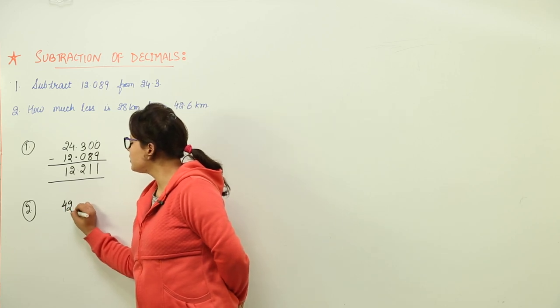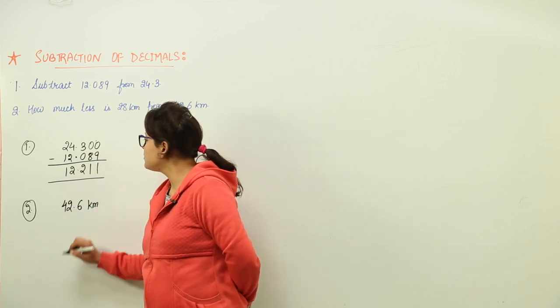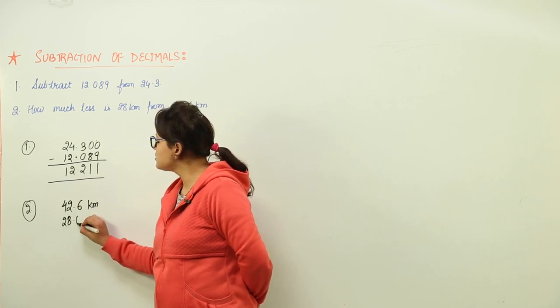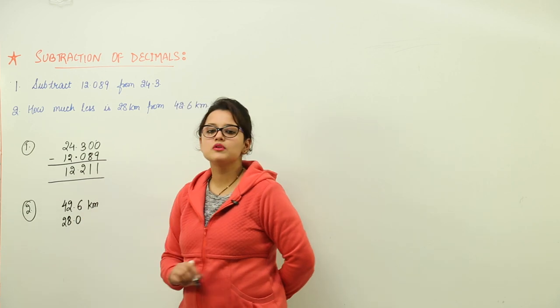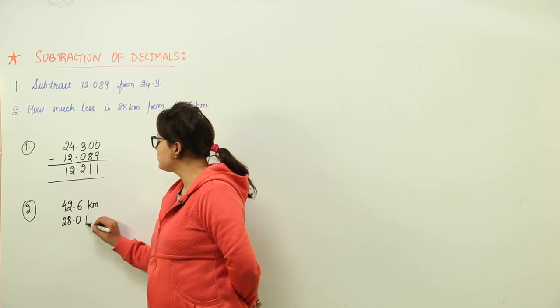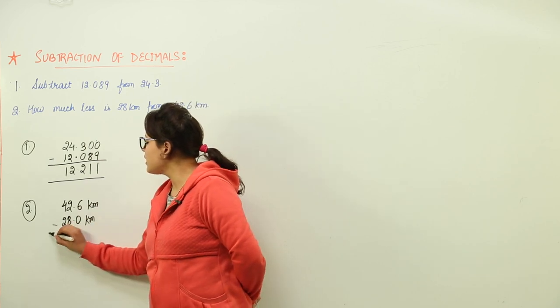So you write 42.6 kilometers first and write below that 28 kilometers and make a point. Why? Because 28 is not having a decimal place. That means the decimal point is after 8. So now we will subtract them.